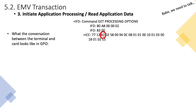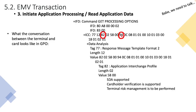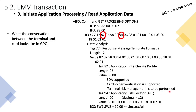What's important is you'll remember from the previous slide we referred to tag 82 and tag 94. There's tag 82 — Application Interchange Profile — and tag 94 — the Application File Locator, AFL. If you try to interpret what the string means with a little data analysis: tag 82 is the Application Interchange Profile, the length is 02, and the value is 5800. If you translate this into plain English, 5800 means SDA is supported, which tells me this is an older card. Card-only verification is supported, so yes the card does support a form of CVM.